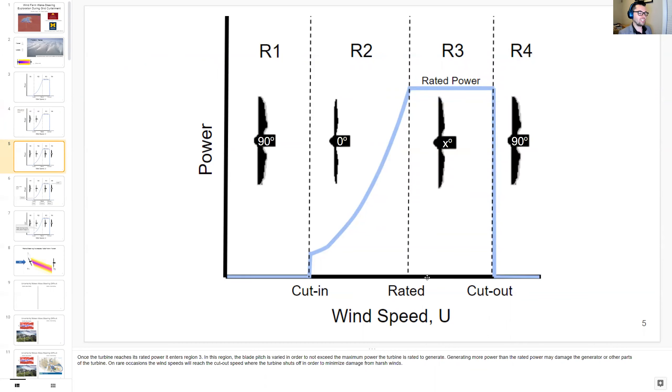Once the turbine reaches its rated speed, it enters region 3. In this region, the blade pitch is varied in order to not exceed the maximum power the turbine is rated to generate. Generating more power than rated power may damage the generator or other parts of the turbine.